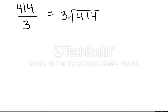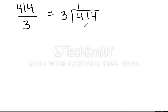You would ask yourself, what is the first term, 4, divided by the outer term, 3? So 3 goes into 4 how many times? Once. Multiply — 1 times 3 is 3. Subtract — 4 minus 3 is 1. Bring down, and you have 11.